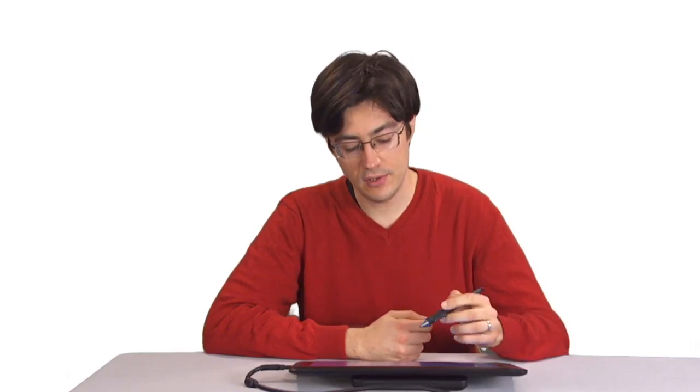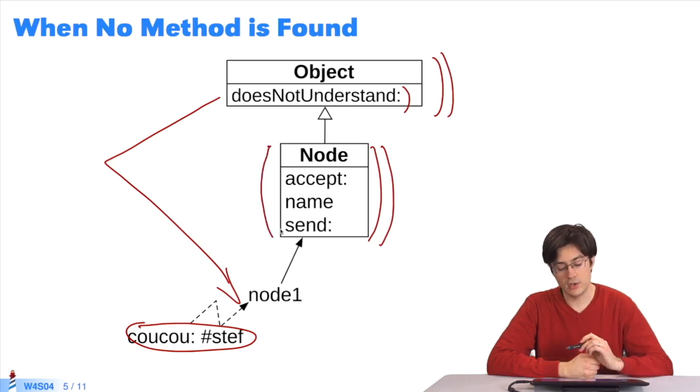A doesNotUnderstand method is found in Object and executed. That means in all the subclasses of Object, doesNotUnderstand can be implemented to trigger a specific behavior when an object, instance, or class does not understand a message.